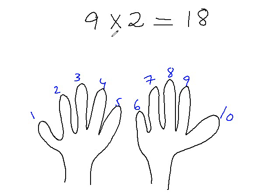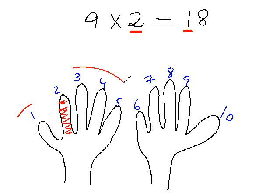Since it is 9 times 2, what you do is just fold the second finger of your hand. So how many fingers are left here? 1 — that's your first digit. And how many fingers are left here? 3 and 5, that is 8. And you have the answer: 18.